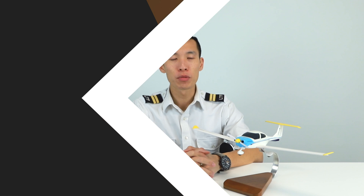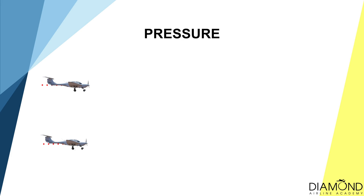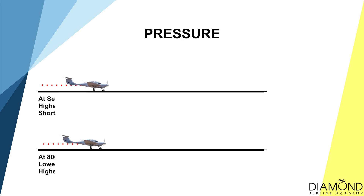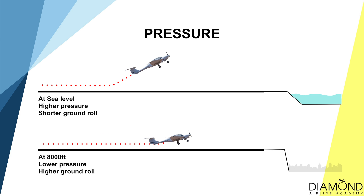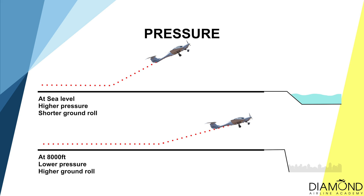When operating on a shorter runway, the safety margin will be reduced. Therefore, being more aware of the factors that will reduce the aircraft's performance is essential. Firstly, air pressure. When the air pressure drops, the aircraft will accelerate slower and climb at a shallower angle, and will require more runway to take off, reducing the overall performance.